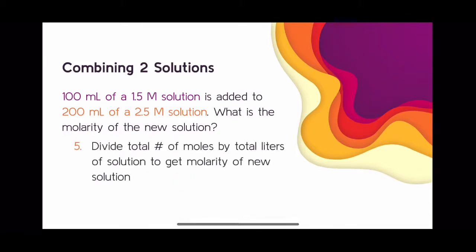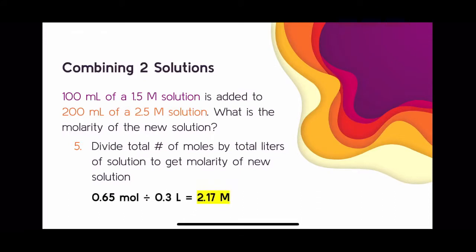The final step is to divide the total number of moles from step three by the total liters of solution from step four to get the molarity of the new solution. Dividing 0.65 moles by 0.3 liters gives the new solution a molarity of 2.17 molar. To double-check, is our answer between 1.5 and 2.5? Yes, it is — so this is an answer I would feel comfortable submitting.